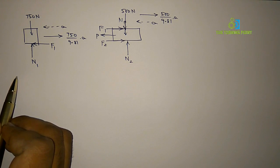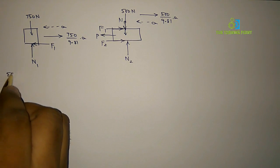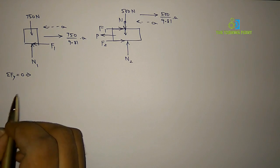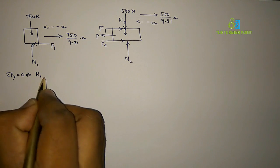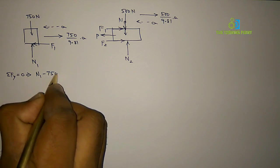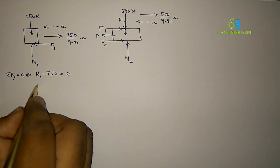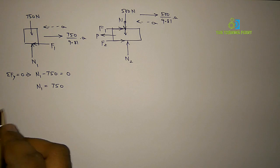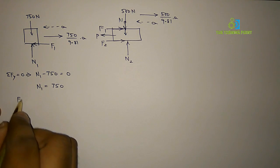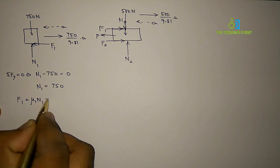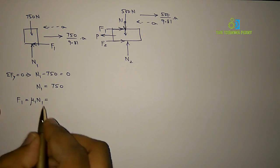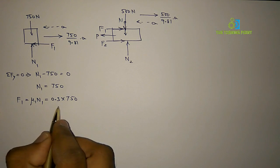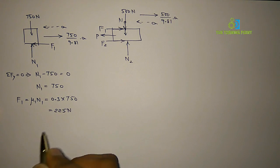Now we can apply equations of equilibrium. First, consider sigma Fy = 0 to find the value of normal reaction. N1 and 750 are the only vertical forces: N1 acts vertically upwards and 750 acts vertically downwards, giving N1 = 750N. From this we can find frictional force: F1 = μ1 × N1 = 0.3 × 750 = 225N.